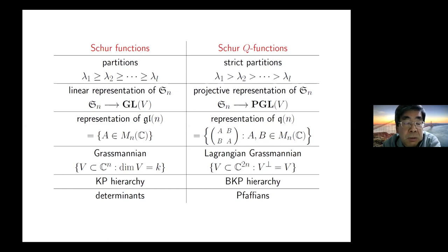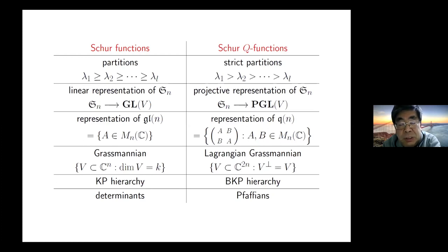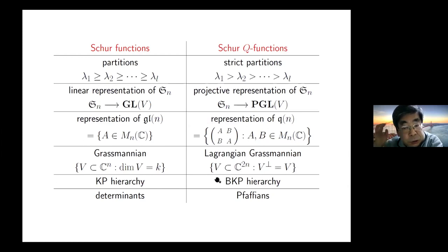The Schur Function describes the irreducible characters of linear representations of the symmetric group, gives irreducible characters of representations of GL_N, represents the cohomology class of Grassmannian varieties, and gives solutions or tau functions of the KP hierarchies. Similarly, the Schur Q Function describes irreducible characters of projective representations of the symmetric group, characters of the queer superalgebra Q_N, Schubert classes in Grassmannian varieties, and solutions of the BKP hierarchies.